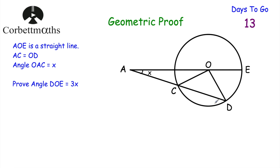Let's have a look at one more question. This time we've got a circle and O is the centre. AOE is a straight line, AC is equal to OD, and angle OAC equals X. We've been asked to prove that angle DOE equals 3X. Feel free to press pause now and try that. AC equals OD, and since OD is a radius, OC is also a radius — so AC, OD, and OC are all the same length.